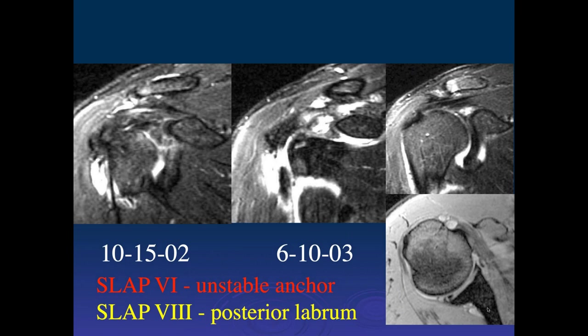Rugby players can also have these. Once you get these more complex tears, you'll often find a little bit of everything — they don't fit neatly into Type 6 or Type 8. They tend to have a plethora of pathologies, and it's kind of misleading to put them into any one category. It's best just to describe the extent of the injuries.